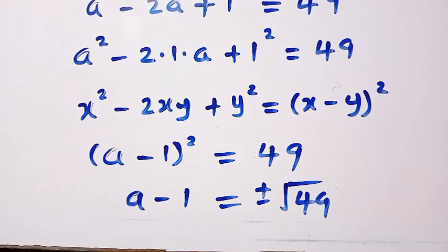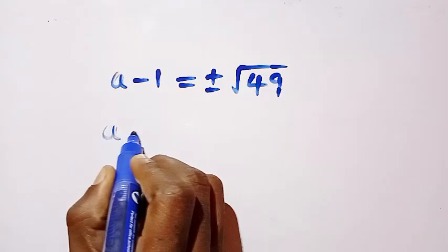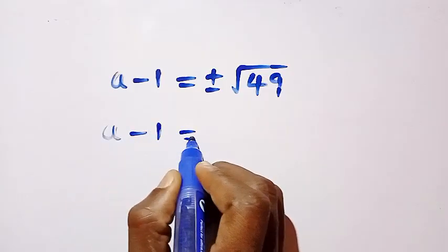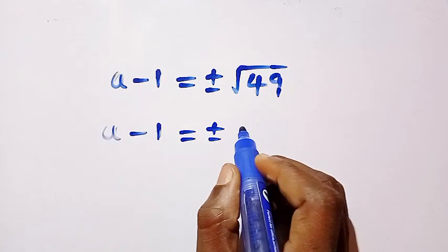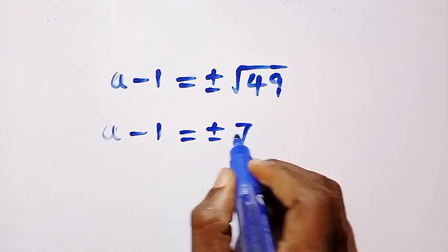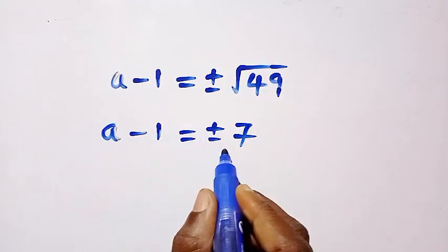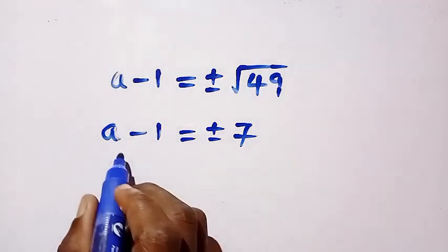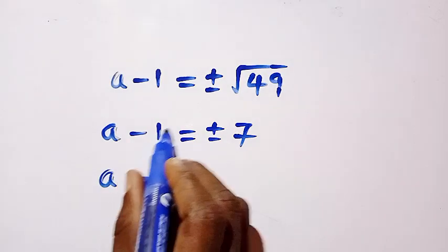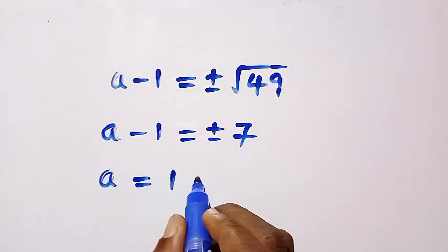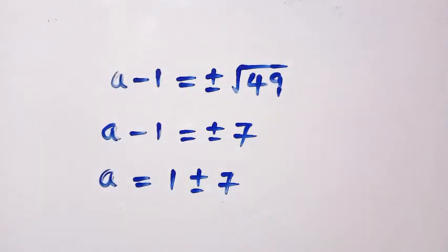In the next step we have a minus 1 equals plus or minus square root of 49 is a perfect square which is 7. And then let's take 1 to the other side which is the right hand side to get the value of a. Here we have a equals - when 1 comes here we have plus 1 - plus or minus 7.